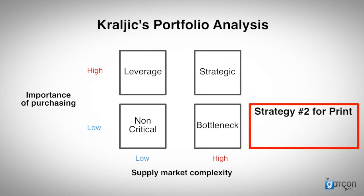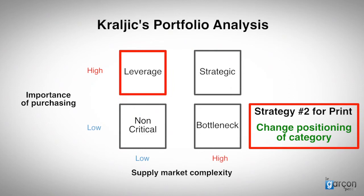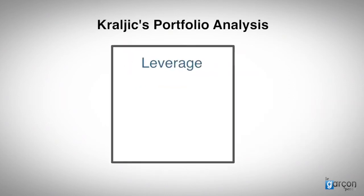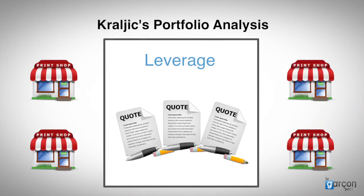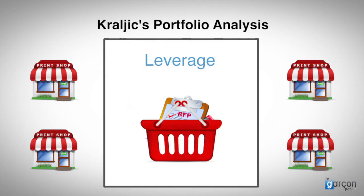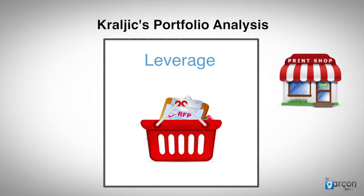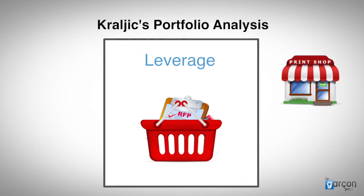Strategy number two is to change the positioning of the category by moving it to another quadrant — leverage. This could be done by aggregating the print orders. Instead of Phil awarding every single job to a different printer after getting three quotes, he could have issued an RFP for a shopping basket of print jobs and awarded a contract for all print jobs to the bidder who offered the best value solution overall.